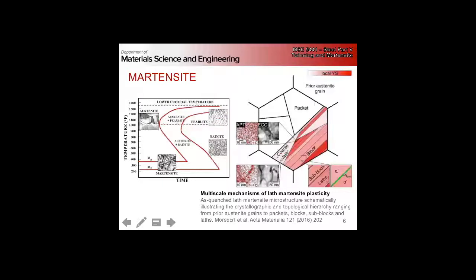Martensite itself has a hierarchical structure: it forms into laths, with sub-block boundaries between laths. We have packets, blocks, sub-blocks, and individual laths — similar to how bainite had sheaves where everything within a sheaf had similar crystallographic orientation. Everything within a block will be in a similar crystallographic orientation. We'll discuss that structure more as we go on.